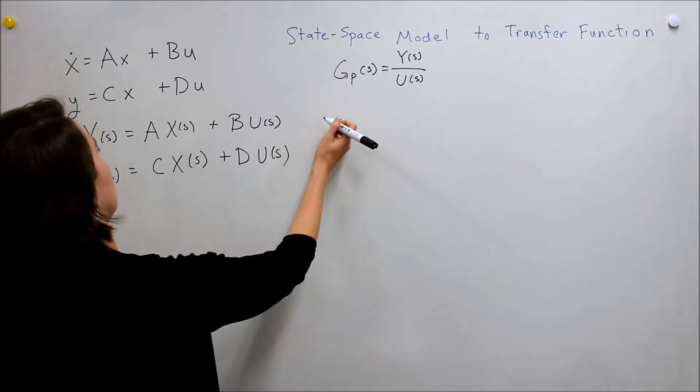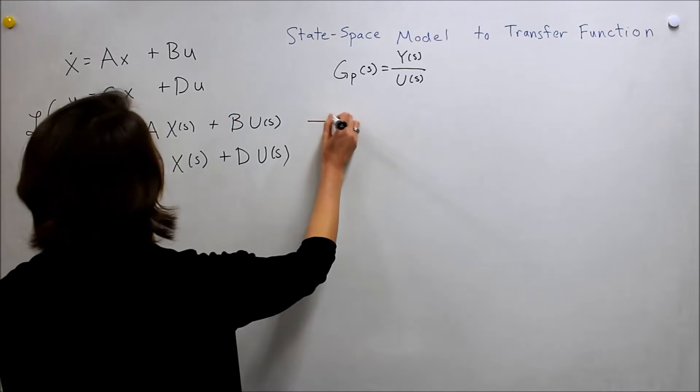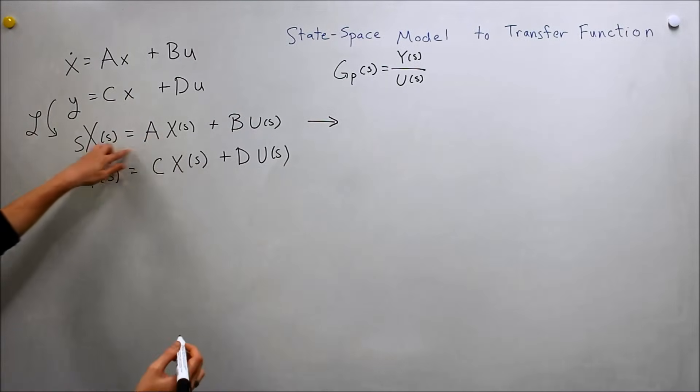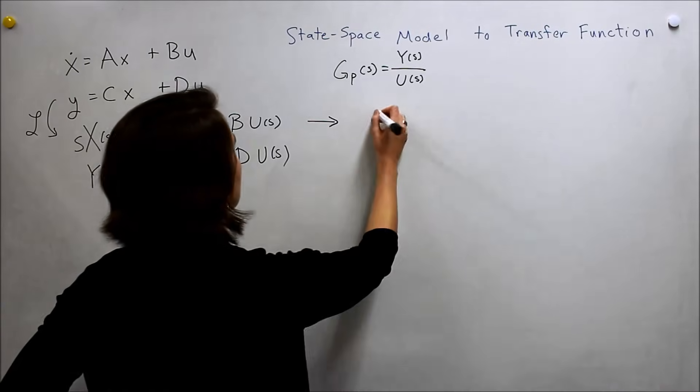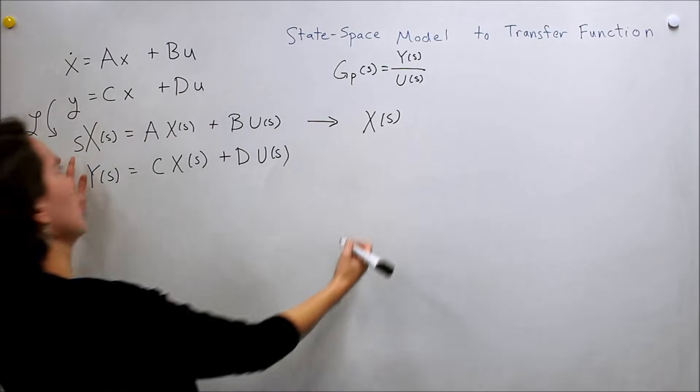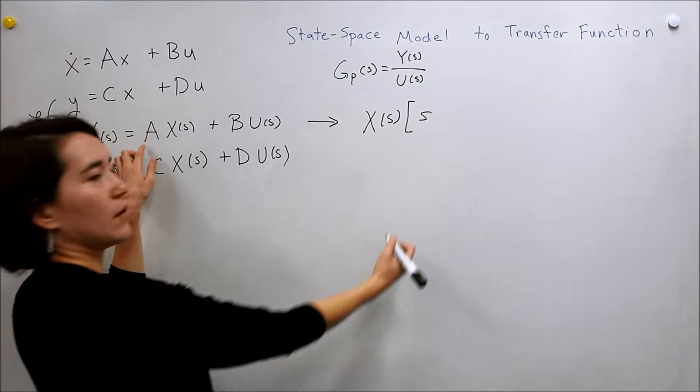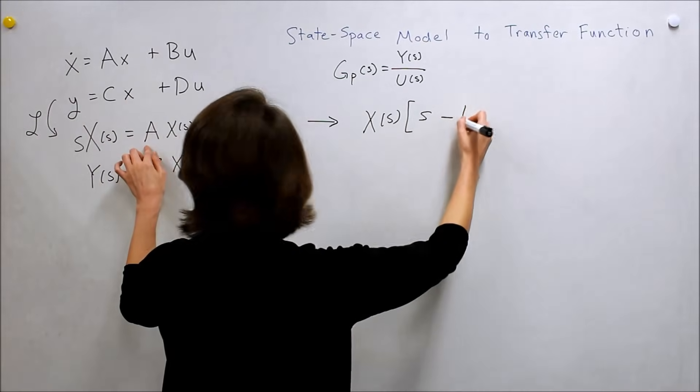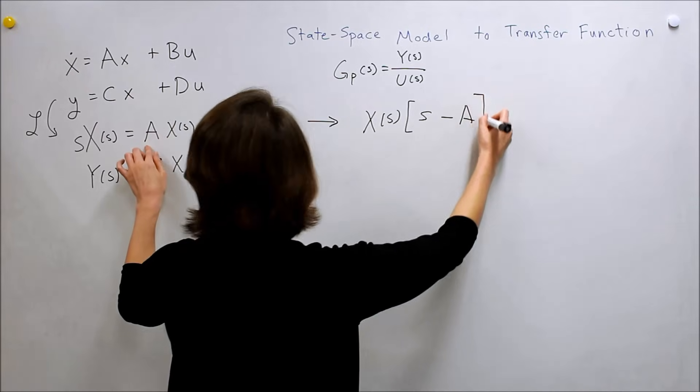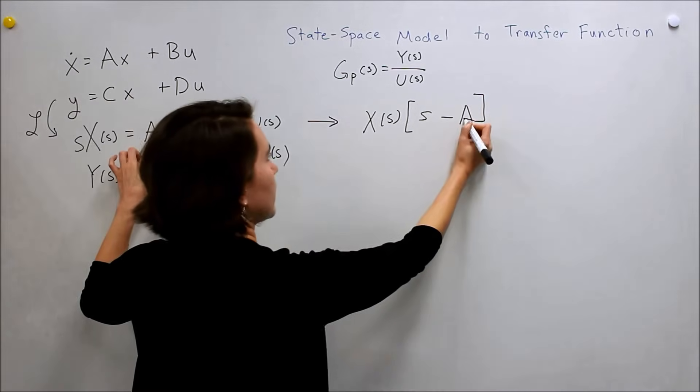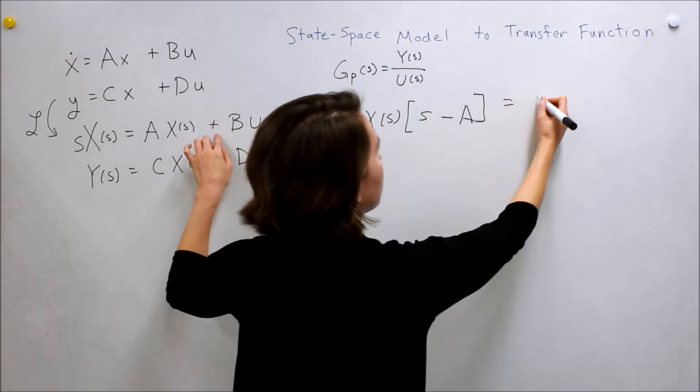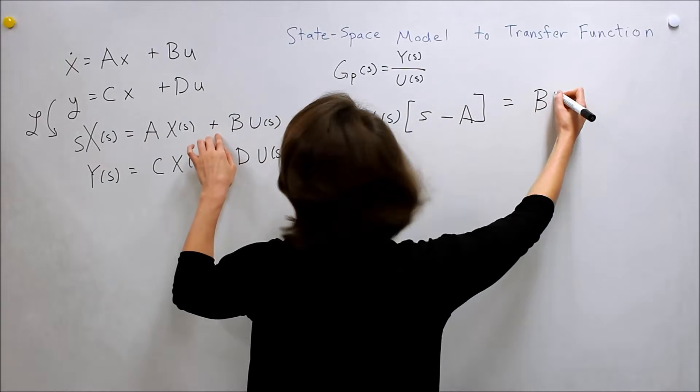And we'll write it over here. So we want to move, we'll move all the x's to one side, so we'll do x of s, and then this will be s. And then we're minusing a. That's an a. And then over here we have b, u.